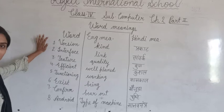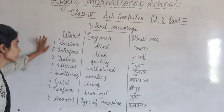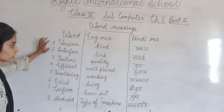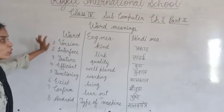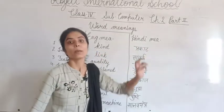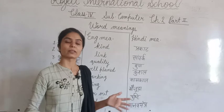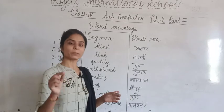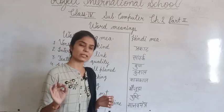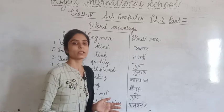Sabse pehle hum word meaning ko revise karenge ek baar. V-E-R-S-I-O-N, version. Version means — English meaning is 'kind' and Hindi meaning is 'prakaar'. Jab ek mein koi bhi features reh jata hai to phir usko doosra version aata hai.